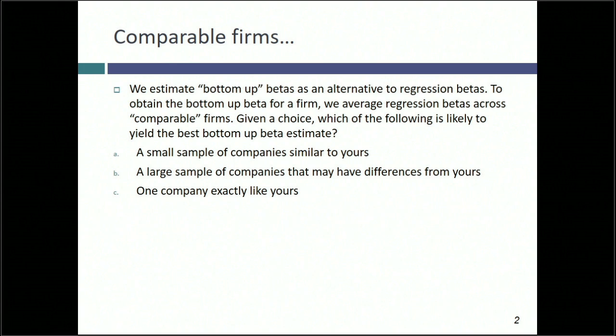I'm going to leave the answer and come back to it, but remember: when I give you the rationale for bottom-up betas, the answer will be obvious because I'm going to base it on a statistical law called the law of large numbers. And what does the law of large numbers require? Large numbers. A sample of three is not a large number. The larger the number, the better.